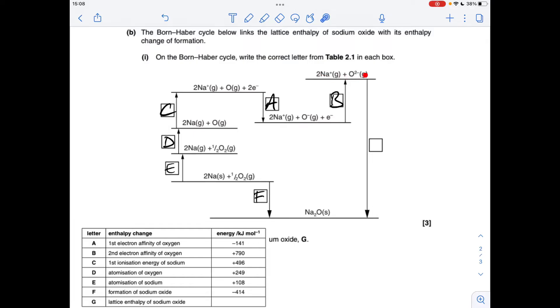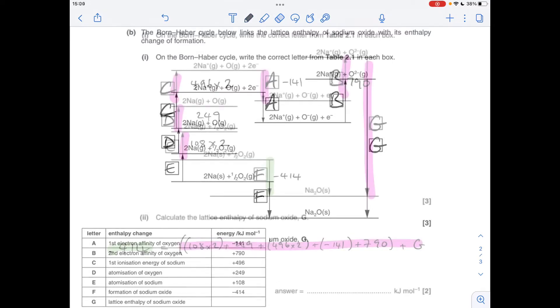And finally we're going from the gaseous ions to the solid lattice, so that's the lattice enthalpy which is option G. Moving on to the calculation now, you can see I've pretty much done it but I'll just explain the colors and what have you. So the numbers first, you'll see that I've just put the numbers in according to the enthalpy changes.